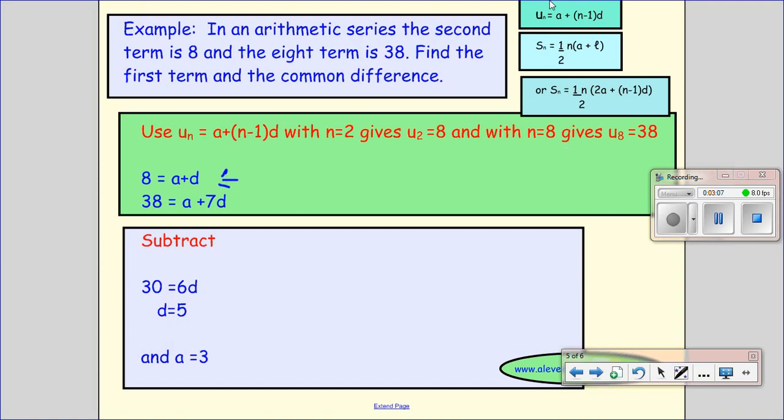And then the second one, the eighth term is 38 plus A plus the eighth term, N equals 8, so 8 take the 1 is 7, so I get this. And then I've got this, and this is quite easy. I can rearrange and do substitution, but actually it looks nice. I can just take it away.